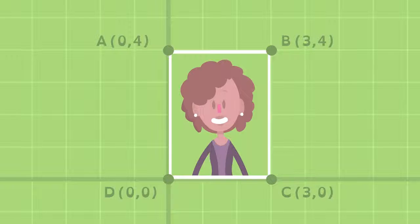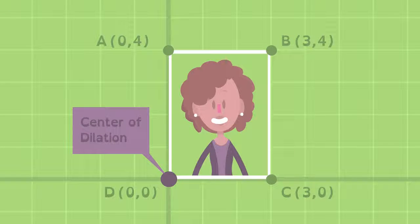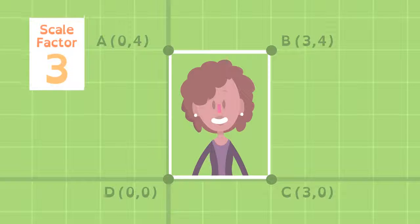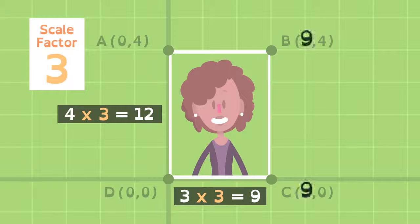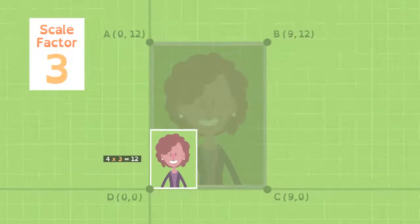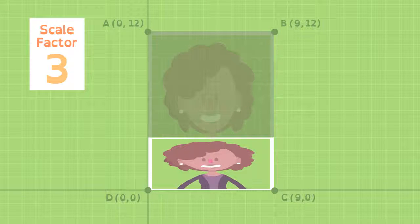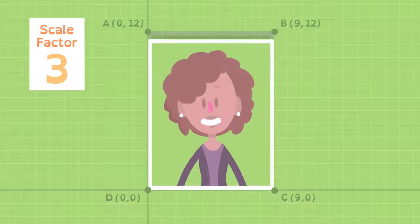A coordinate grid can help us see how this works. If the center of dilation is 0, 0, and the scale factor is 3, the horizontal distance from the center of dilation is 3, and the vertical distance is 4. Multiplied by a scale factor of 3, the horizontal difference becomes 9, and the vertical distance becomes 12, stretching the shape 9 units to the right of the center of dilation and 12 units up.